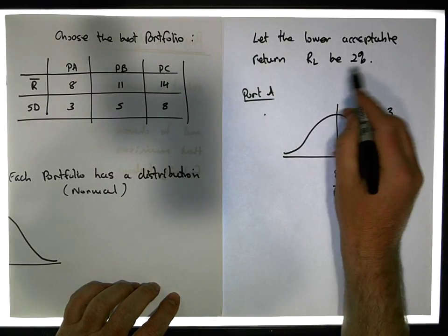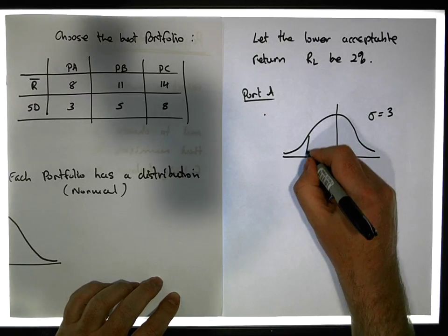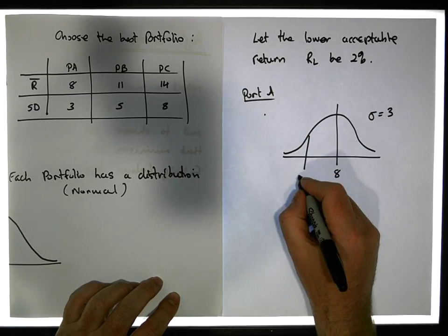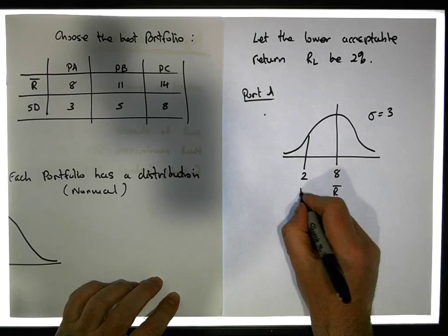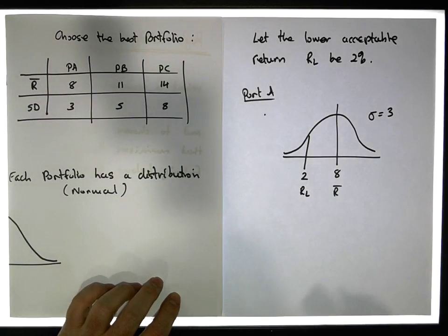We don't want any... we want to minimize. This is 2% or RL, which is 2, this is RL.